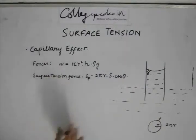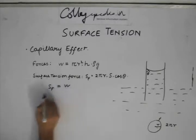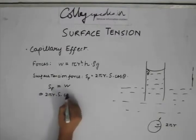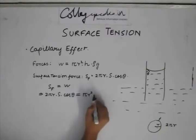And these two forces must balance each other. So Sf is equal to w, therefore, 2π r times s into cos theta is equal to π r² h into ρ into g.